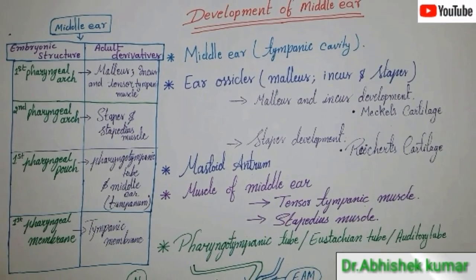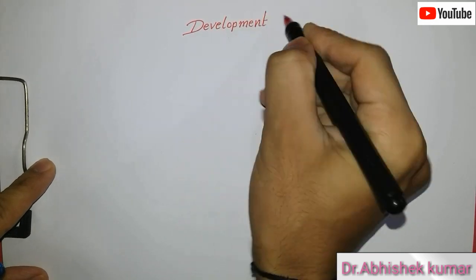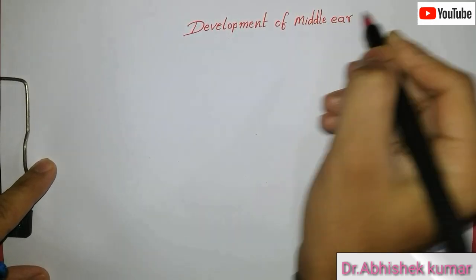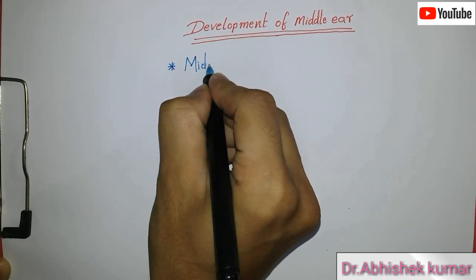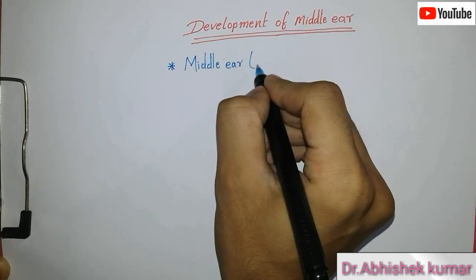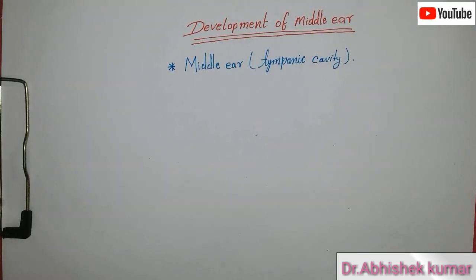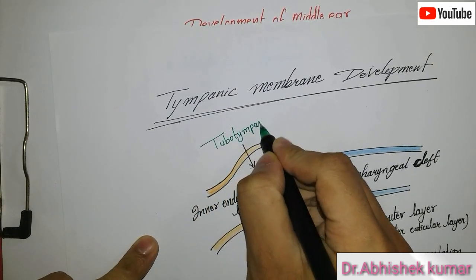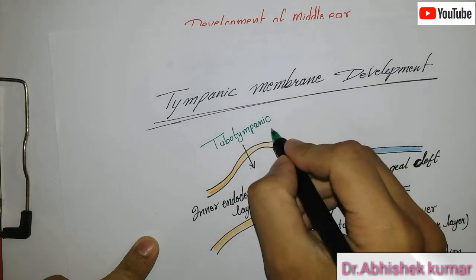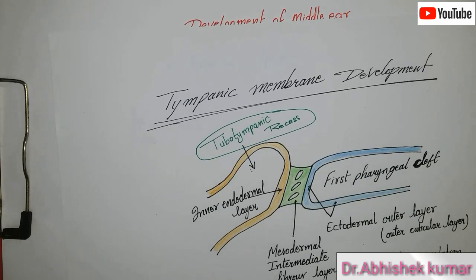So let's start today's topic: development of the middle ear. The middle ear is also called the tympanic cavity, which mainly develops from the distal part of the tubo-tympanic recess. With the help of a diagram you can see the tubo-tympanic recess, which develops mainly from the dorsal part of the first pharyngeal pouch with little contribution from the second pharyngeal pouch.